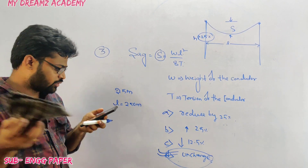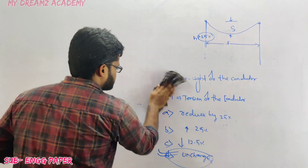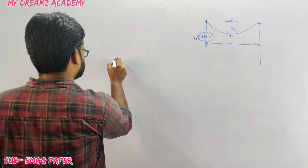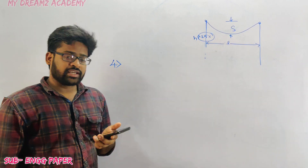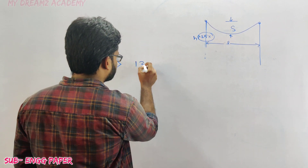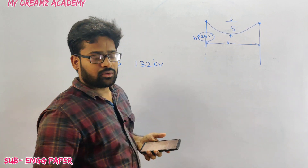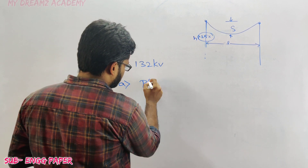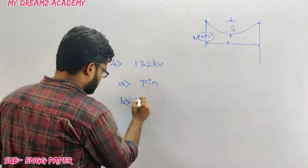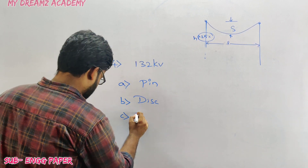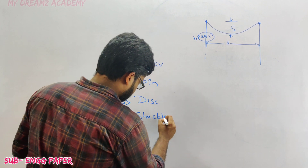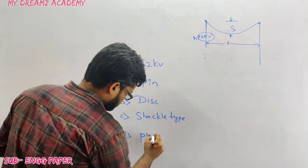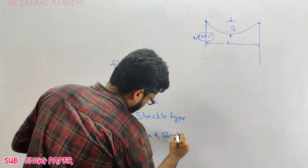Question number four is also from power systems. The insulator used on 132 kV transmission lines is generally: option A — pin type, option B — disk type, option C — shackle type, option D — pin and shackle type.